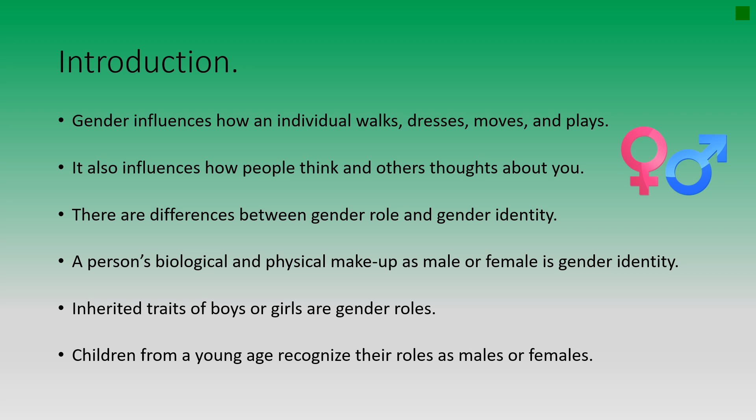A person's biological and physical makeup as male or female is gender identity — it's what you're born, whether you're born a boy or a girl. There are also inherited traits. The inherited traits associated with boys or girls are gender roles. For example, boys typically playing with army men or trucks, and girls playing with baby dolls or stuffed animals. These are inherited traits, and children from a very young age will recognize their roles as males or females.